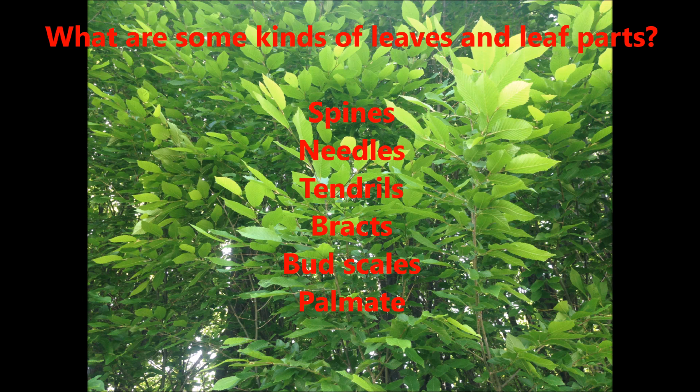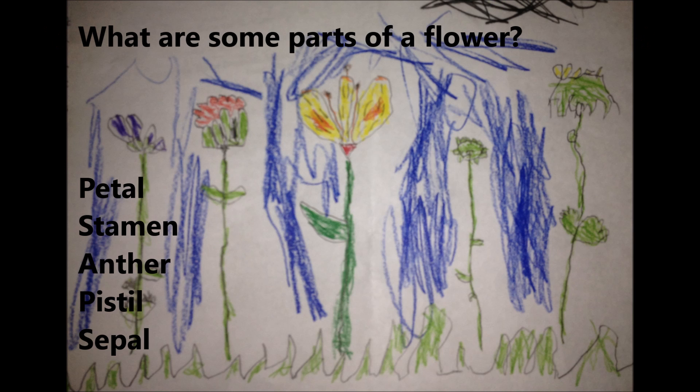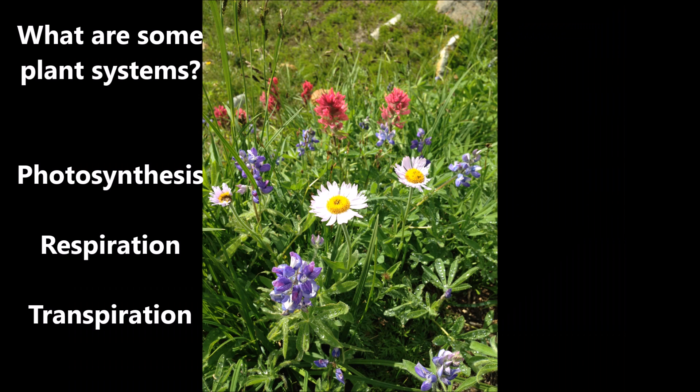What are some parts of a flower? Petals, stamen, pistil, and sepal.